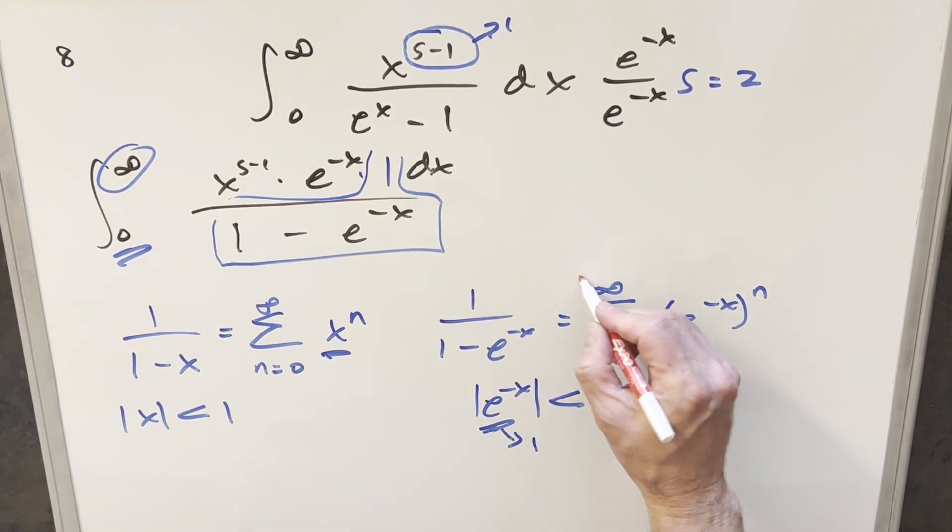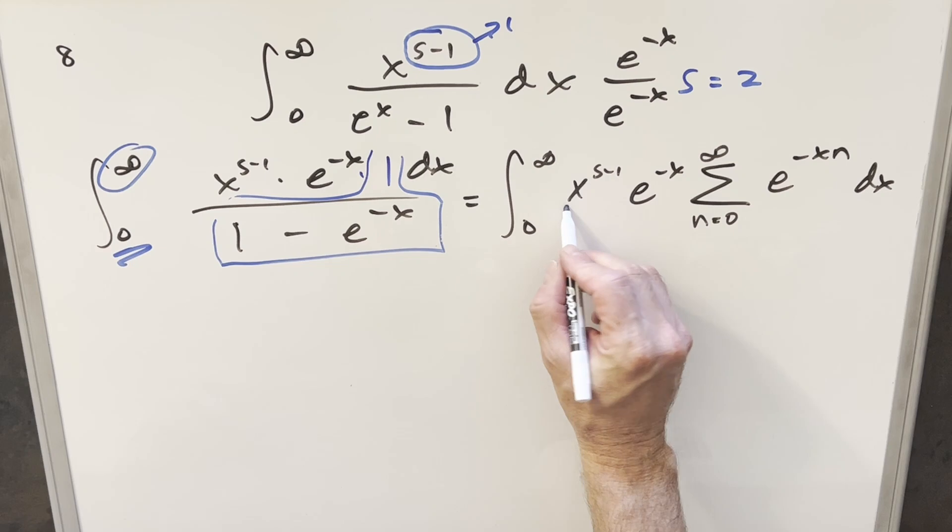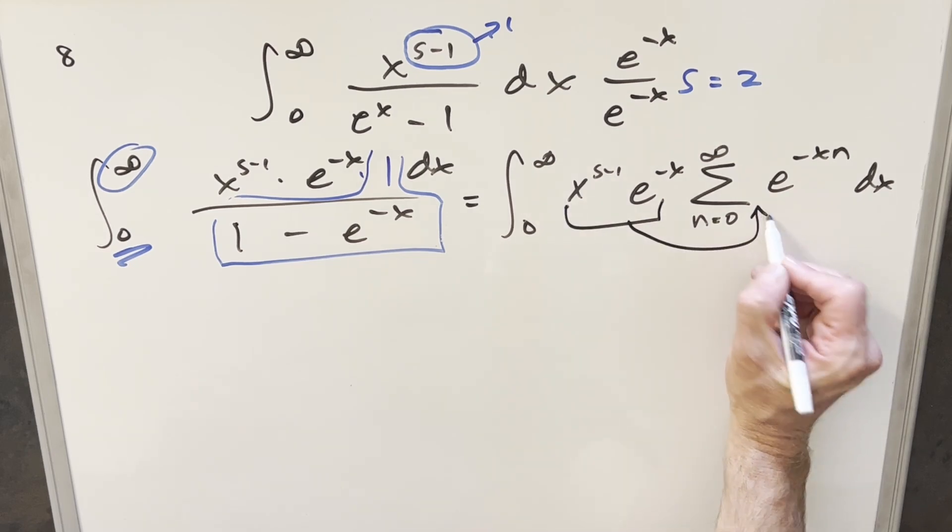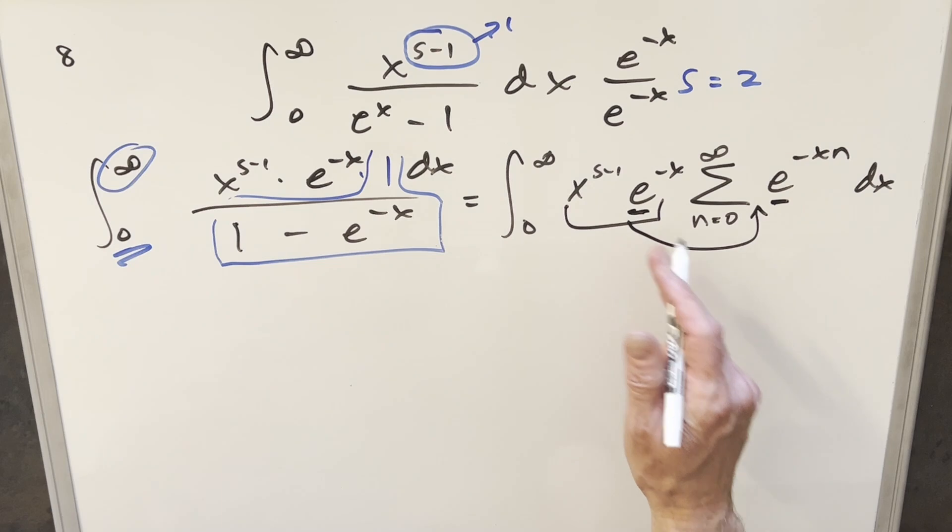So what we can actually do is just take this value, plug it in right here in the integral, continue from there. But now from here, we can just take this right here, and I can distribute this inside the sum. And we're going to get some simplification because we've got the same base on the e's. So we can kind of pull those all together.